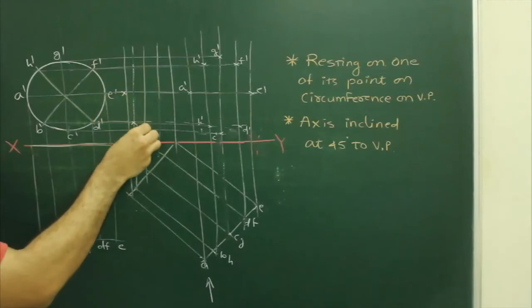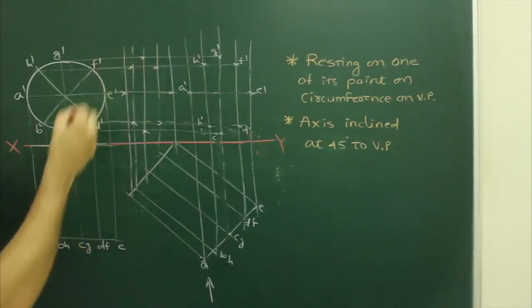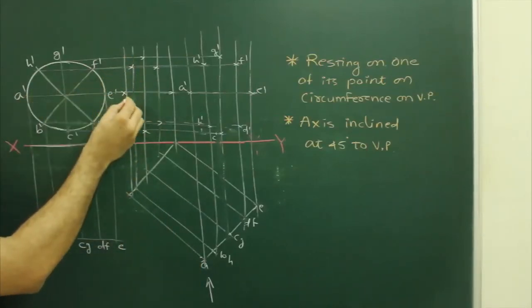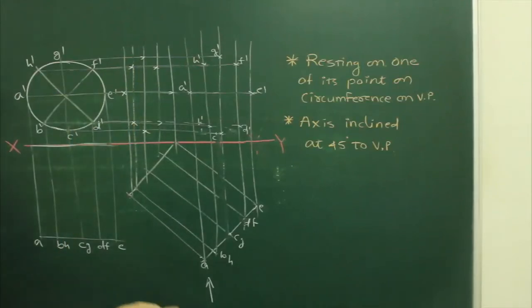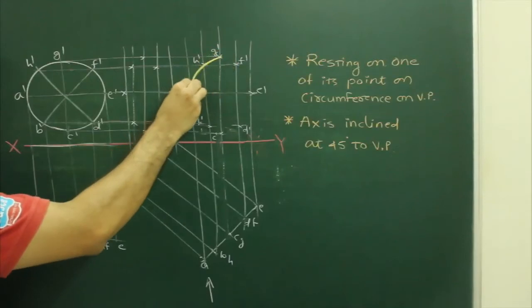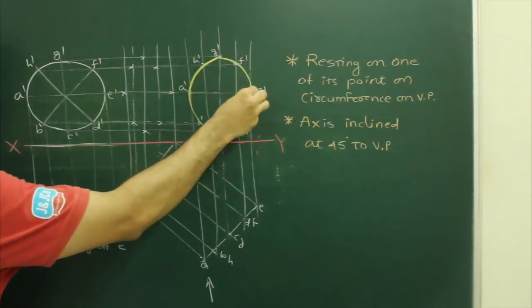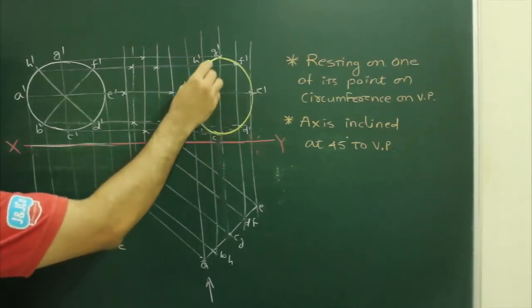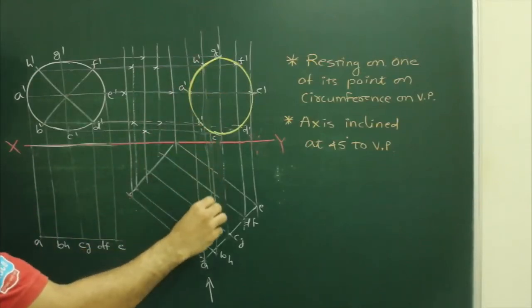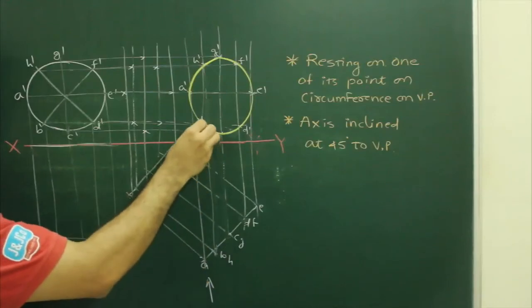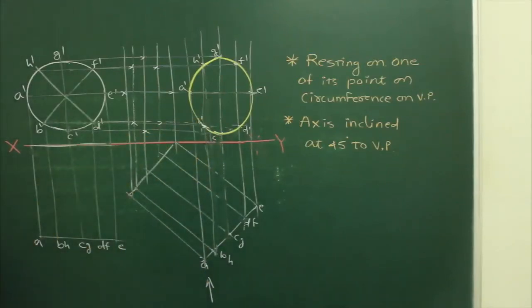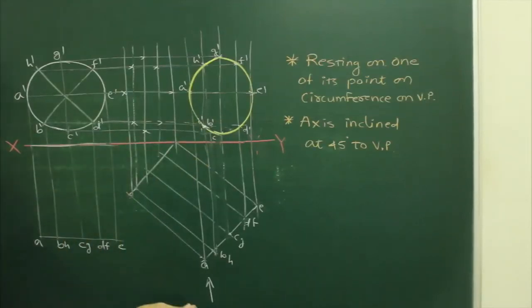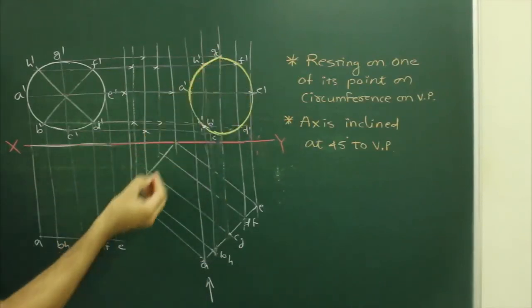Now we know that the behind points are this. Same way, we can take this A, project from here, same point. Now we will also see here what about this part is nearer.